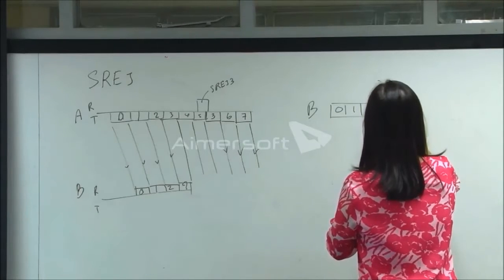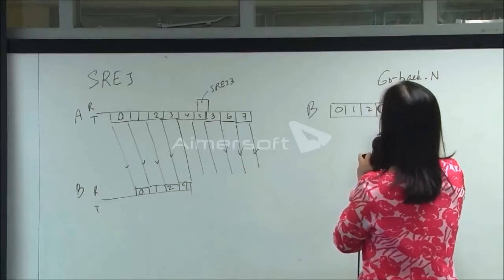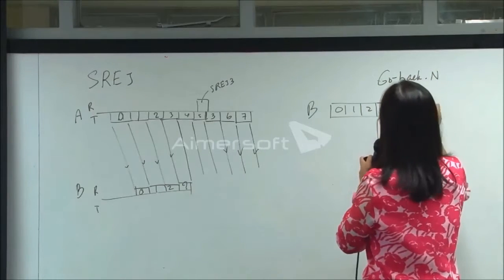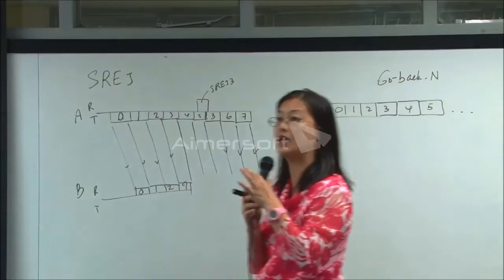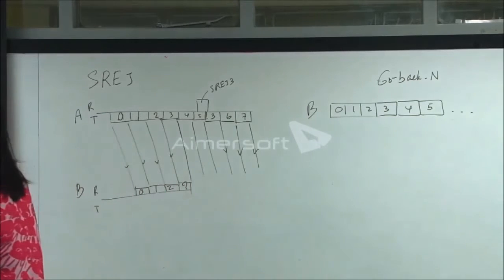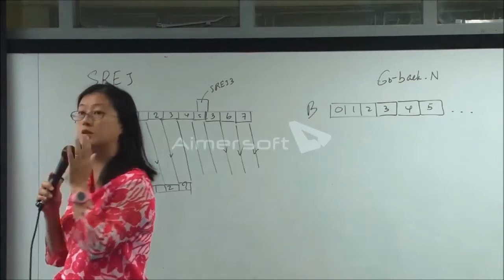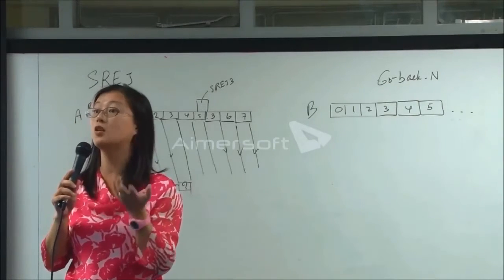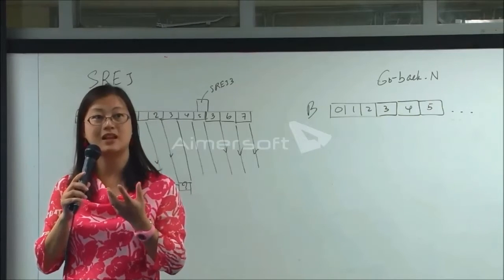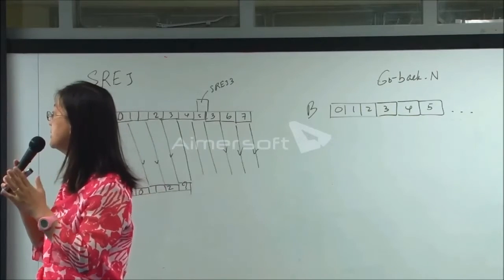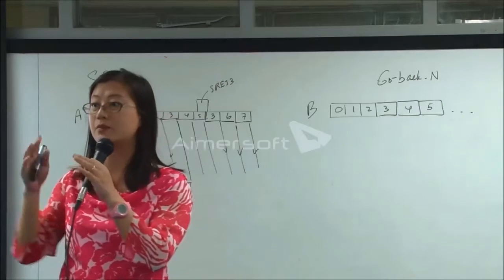The receiver for go-back-N doesn't have to keep blank spaces — it just waits for frame 3 and then receives 4, 5 in order with no gaps allowed. To prevent ambiguity as to which frame is being transmitted, the window constraint for selective repeat is more restrictive, meaning the window must be smaller than for go-back-N, because you can have blank spaces in between received frames.